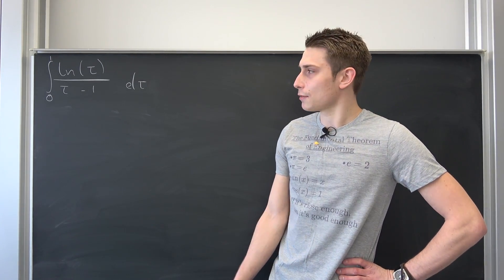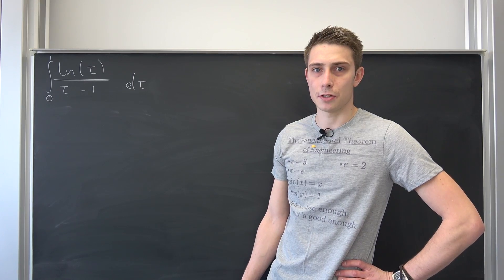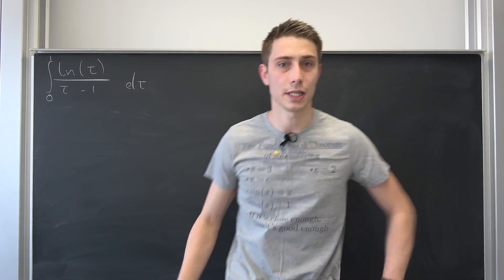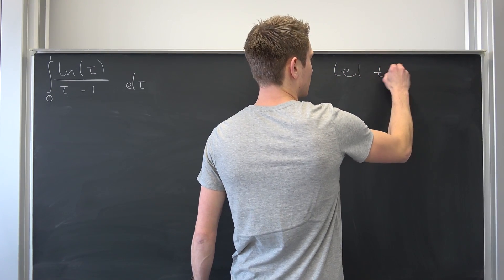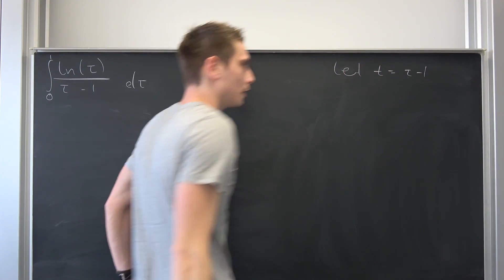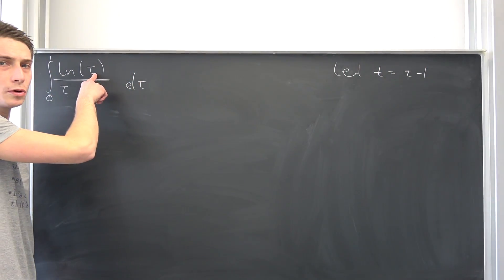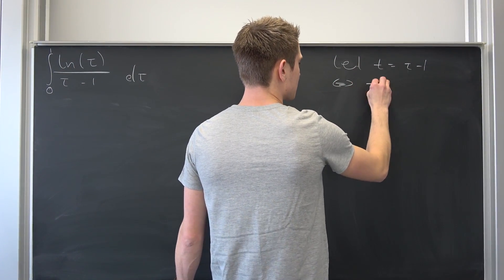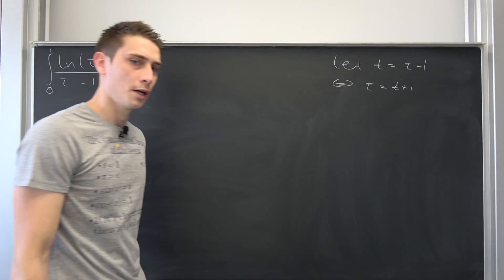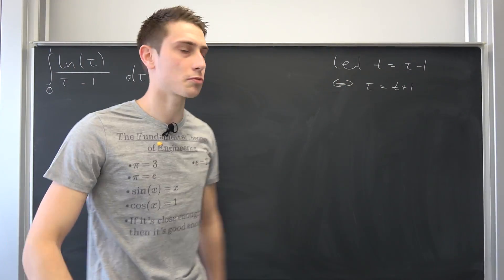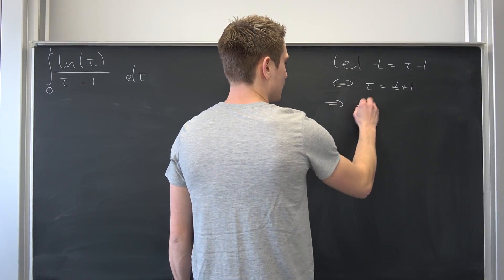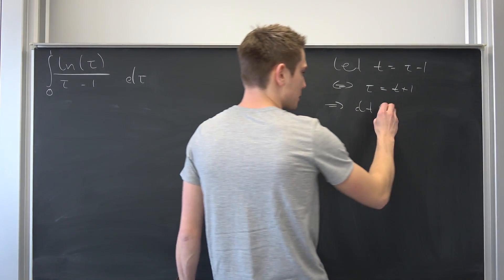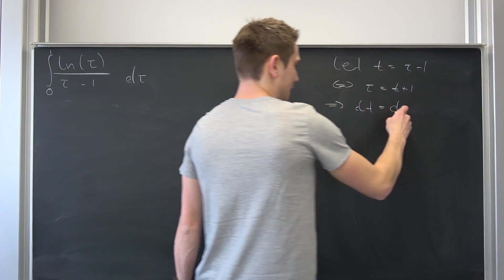Okay, we're going to deal with this right now and at first I would like to introduce a little substitution, for example that t be equal to this denominator right here. We have to substitute for tau later on, so why not solve for tau? That's equivalent saying that tau is nothing but t plus 1. Also, we have to differentiate this right here to get our differentials. dt is nothing but, okay, negative 1, it's just a constant, it's going to vanish. So that's equal to d tau.